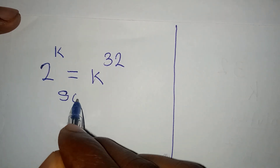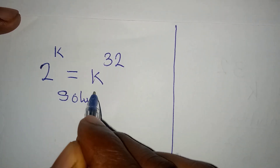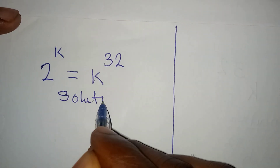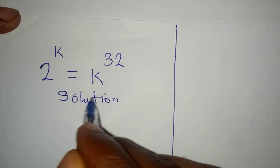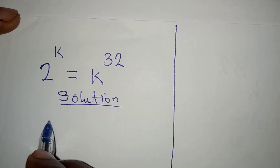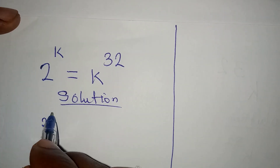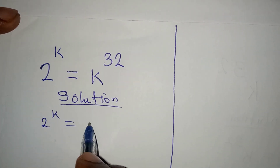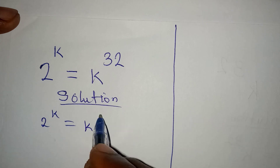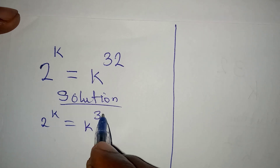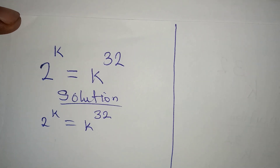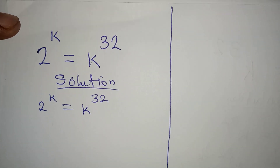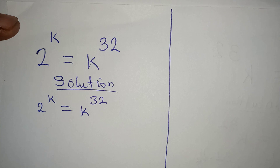Hello everyone. Let's work on this problem quickly. We have 2 to the power of k equals k to the power of 32. We are looking for the value of k.